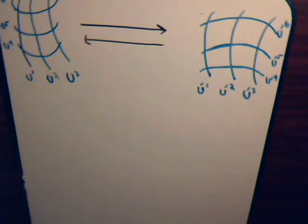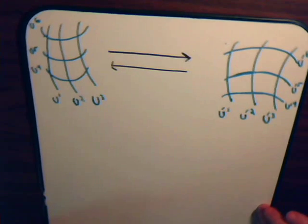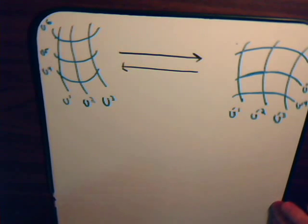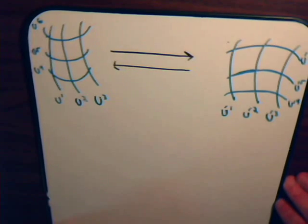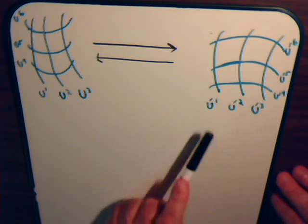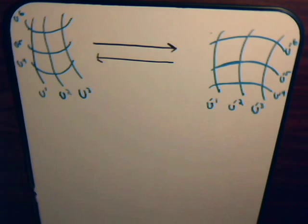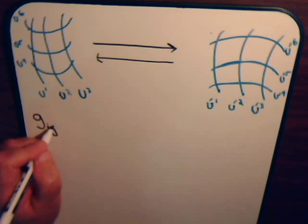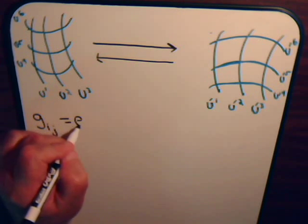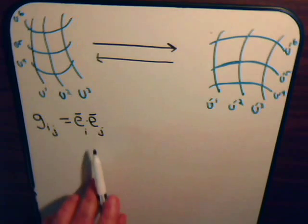In this video, we're going to consider some of the general transformation properties of the metric tensor. We have two curvilinear coordinate systems: the u system with axes u1, u2, u3, and so forth, and over here a different set of curvilinear coordinates designated as u'1, u'2, u'3, and so forth. We had demonstrated a couple of videos ago that the metric tensor can be expressed as the dot product of two tangential vectors.